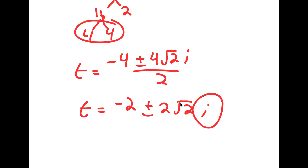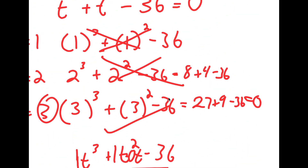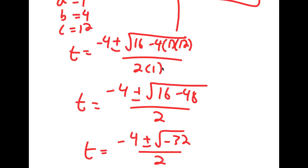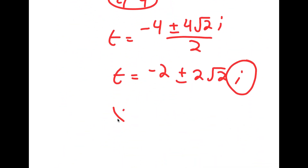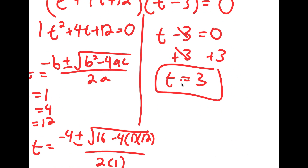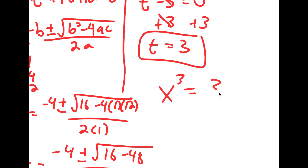Notice that this is an imaginary solution. Since t equals x to the power of 3, x cubed cannot equal an imaginary number, so there's no real solution from this. The only valid solution is t equals 3, meaning x to the power of 3 equals 3, so x equals the cube root of 3.